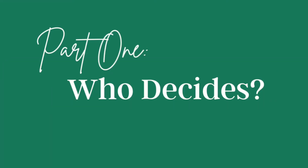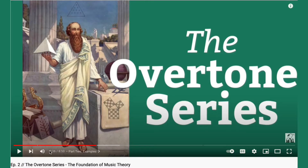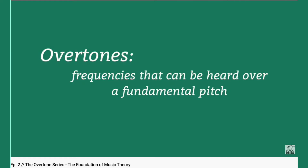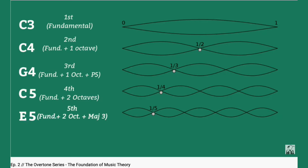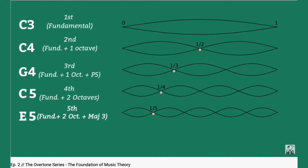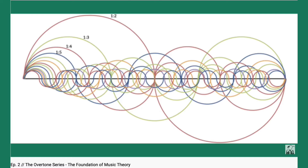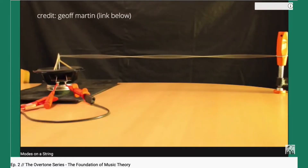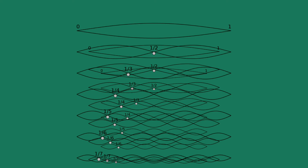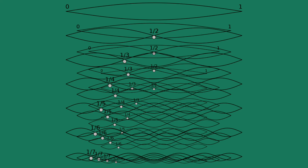In the last episode of this series I discussed what's called the overtone series. Just to refresh, overtones or harmonics are frequencies that we hear within a fundamental pitch. The overtone series is the foundation of how we understand and communicate western music, which ultimately is what we know as music theory. When we discussed this topic we were specifically referring to what happens when you play one pitch. But what happens when you play more than one pitch? Well, things get complicated.